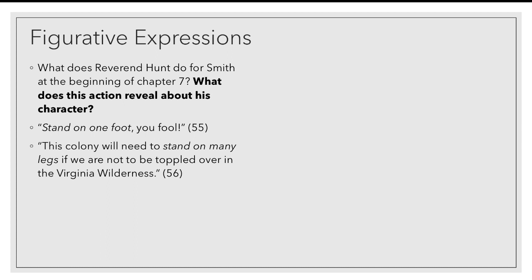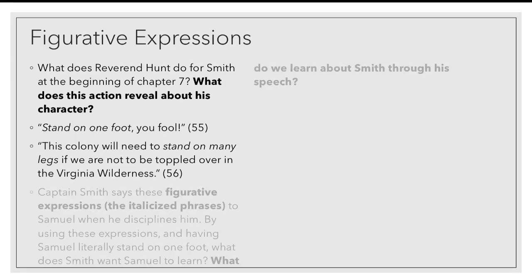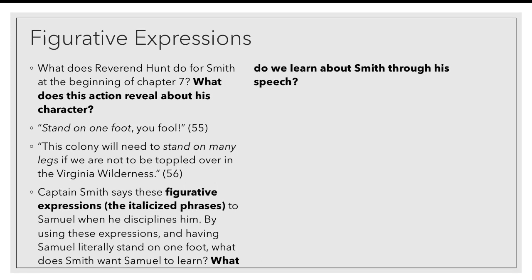He doesn't mean literally everyone needs to stand on two legs, but that to be successful, everyone has to stand as one unified force to ensure their survival. This is very important, especially because Captain Smith has in some ways stood on one leg himself, particularly when he critiques the gentlemen. But he's trying to impart this message to Samuel: you need to work together with James and Richard for all of us to be able to survive. What does this teach us about Captain Smith? That he, too, is learning from being saved by Reverend Hunt from being hanged, and that he's passing this wisdom on to Samuel.